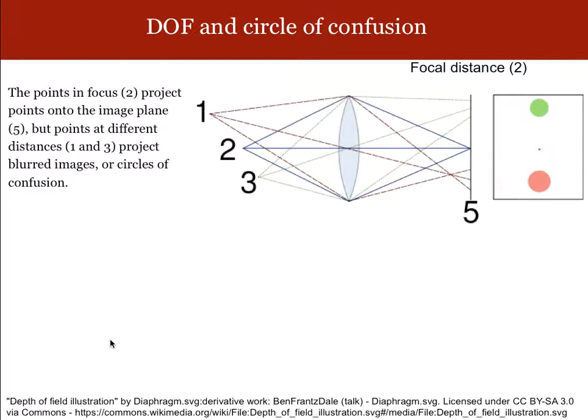So why do things change when we stop down the aperture? That's going to be explained in this slide here. Here's point number two, that's in proper focus. Its distance is such that the image plane is at the right distance for good focus, so this one is at the diffraction limit.